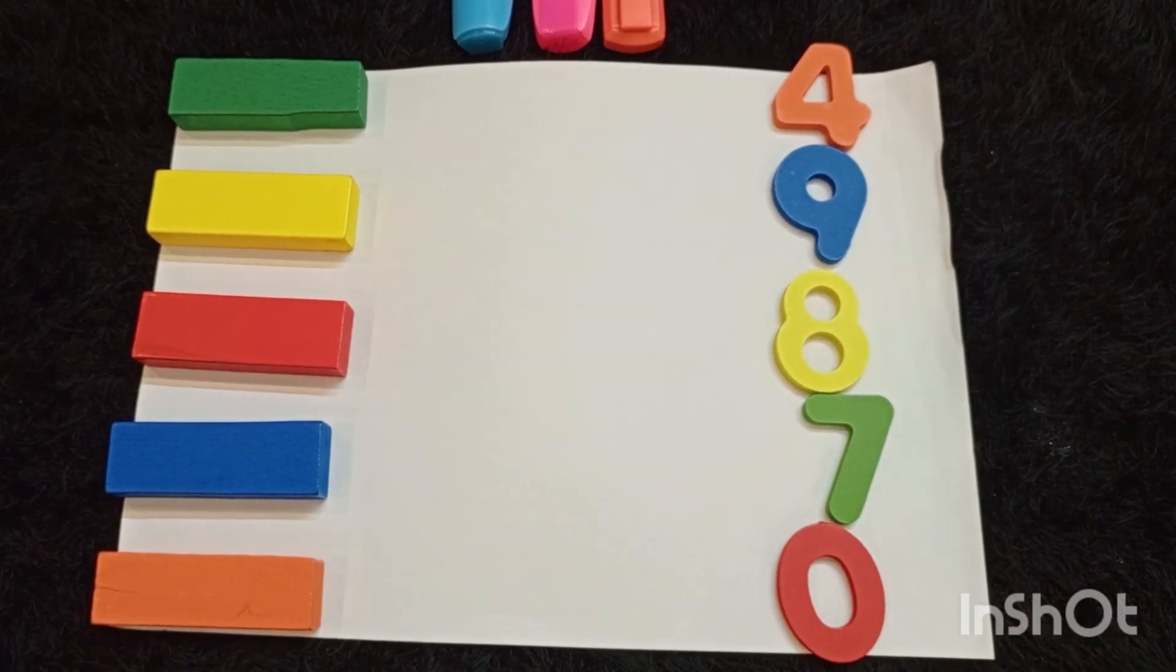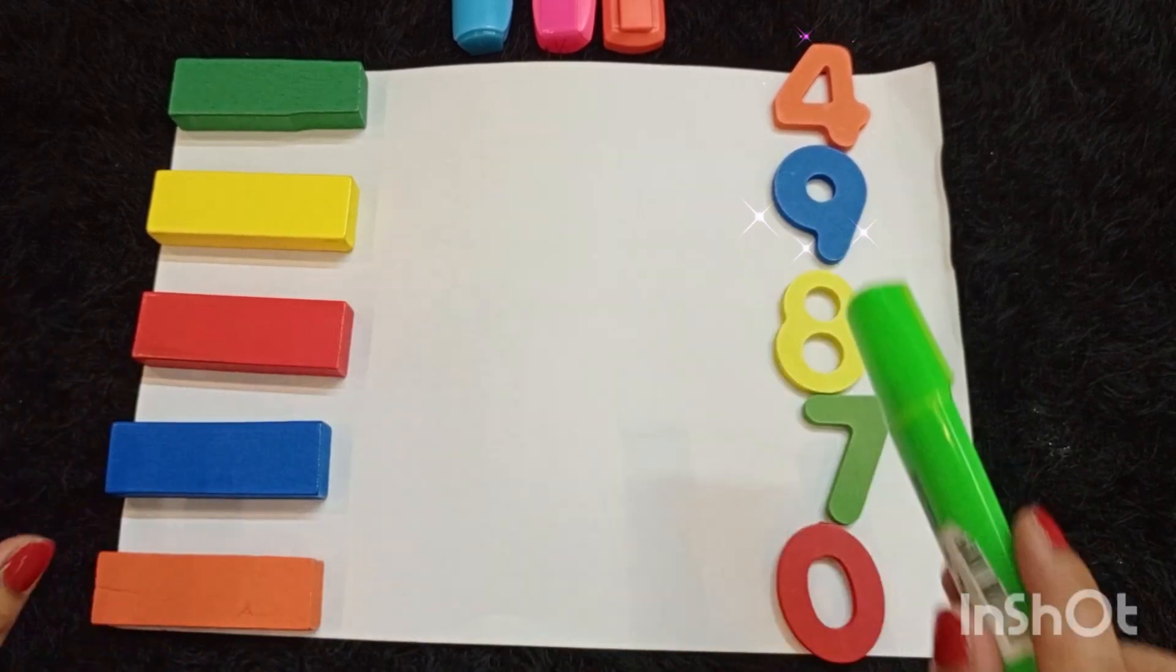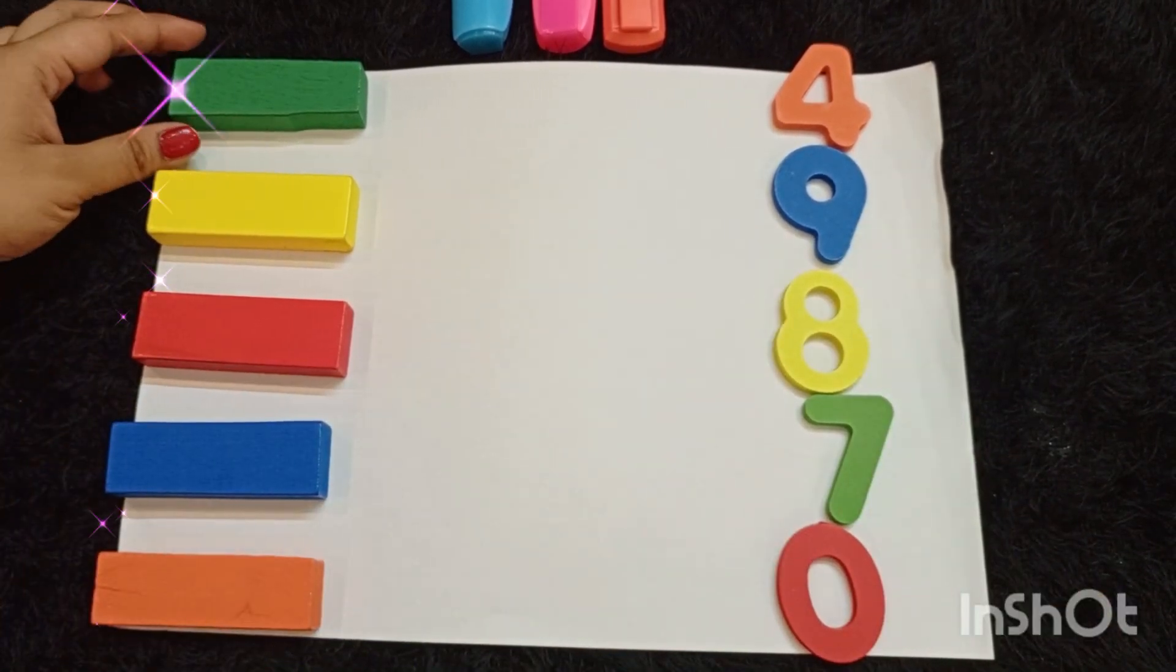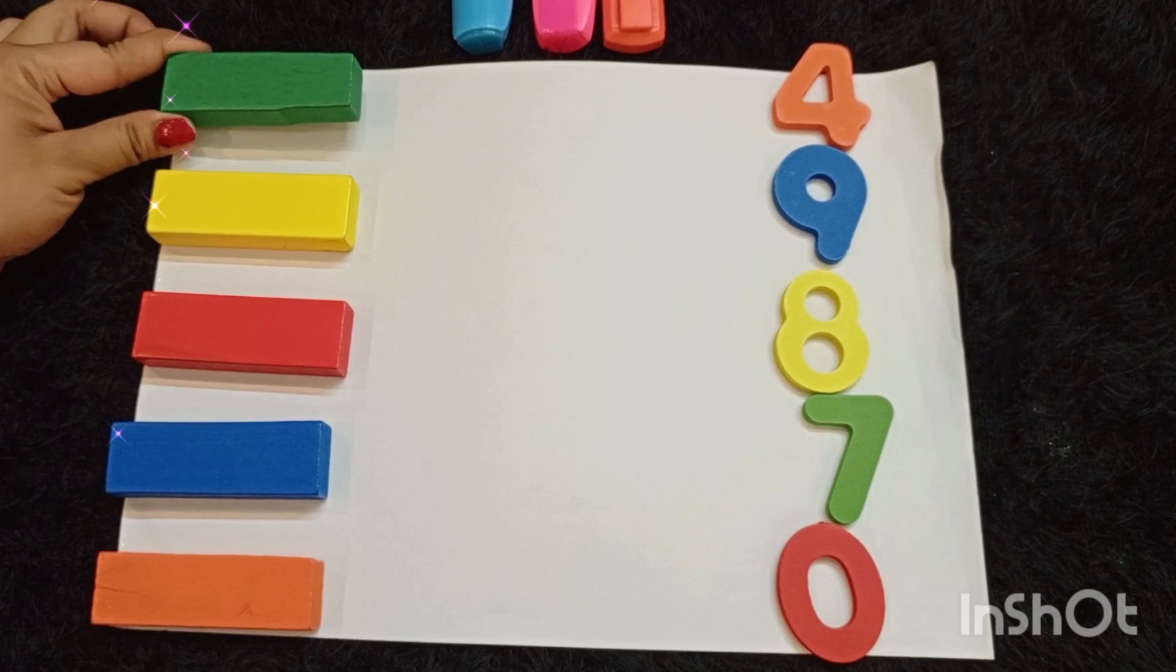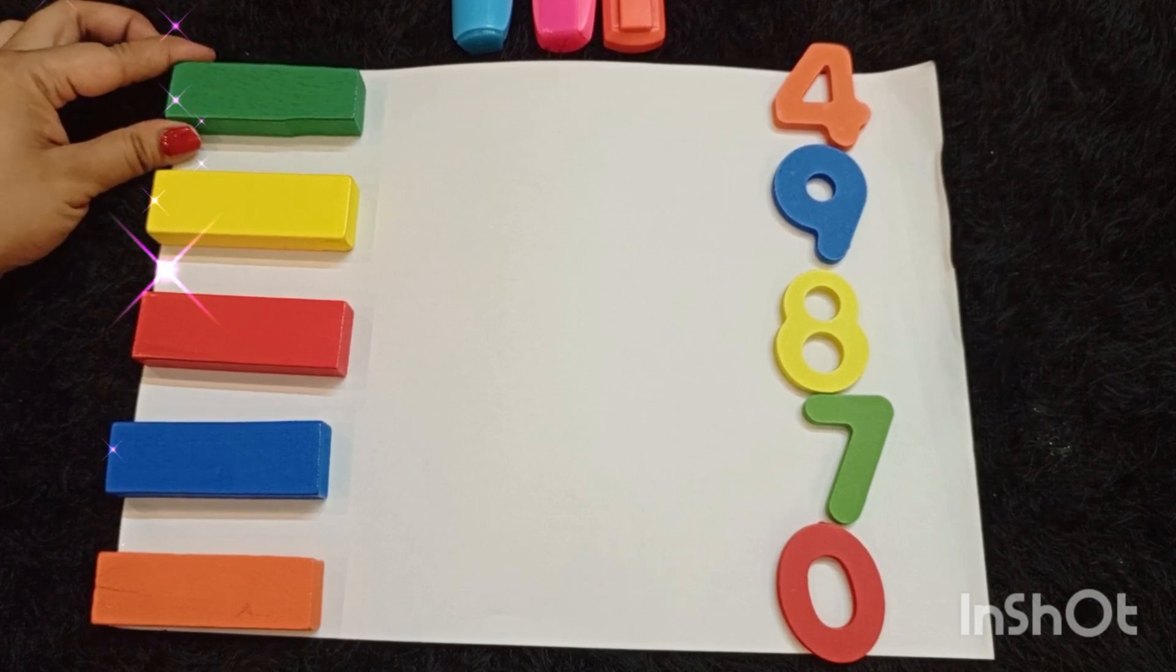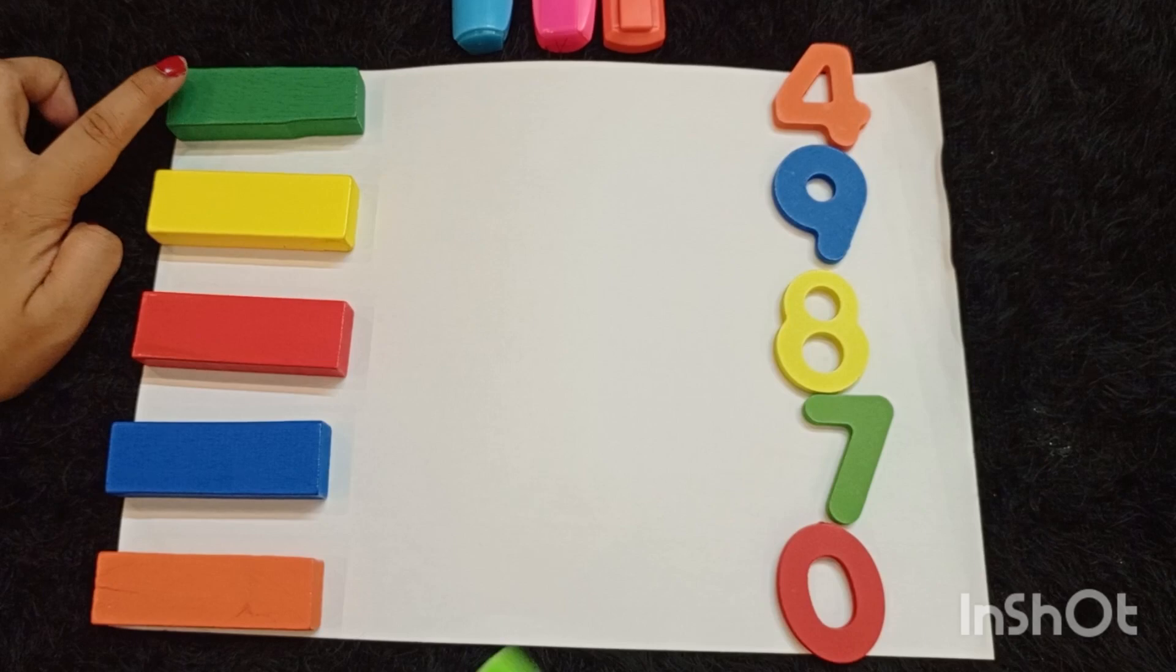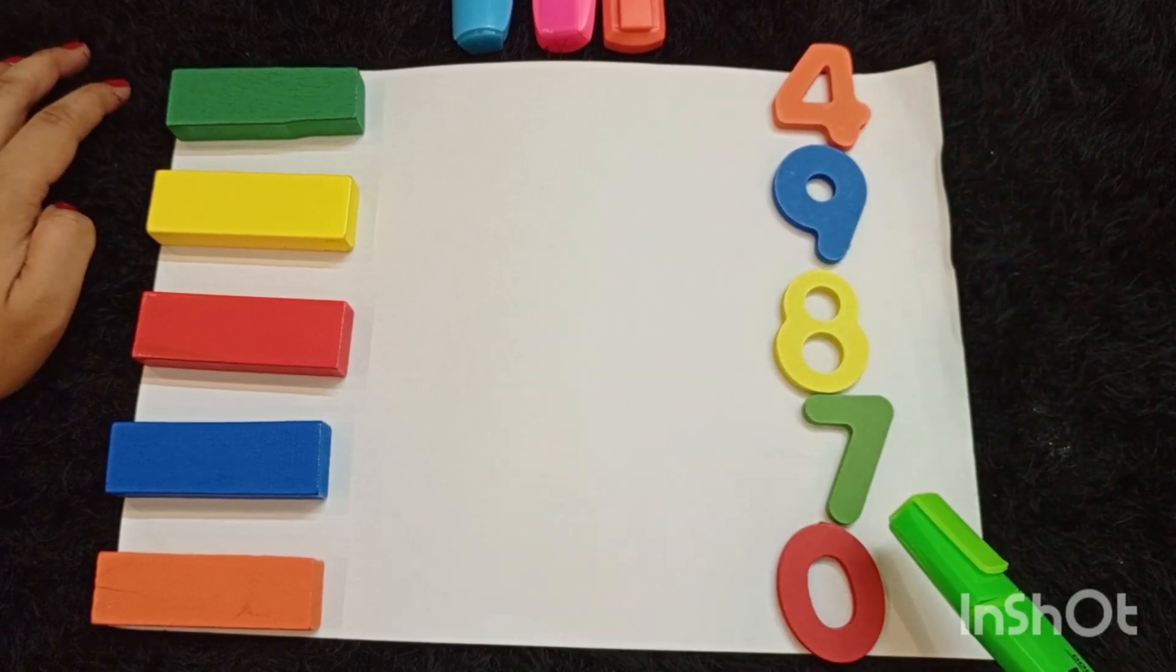Now we are going to match the same colors. First, we have the green block. We have to match the green block with the green number.